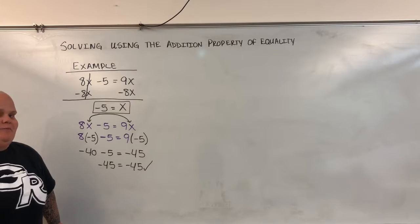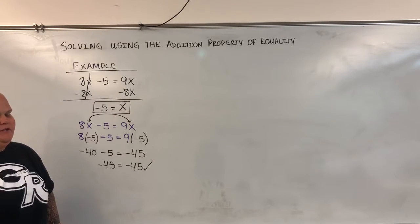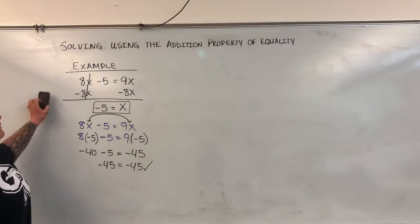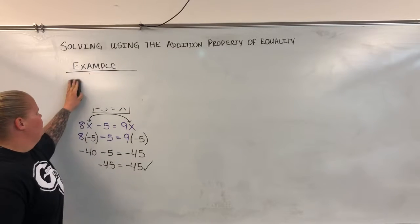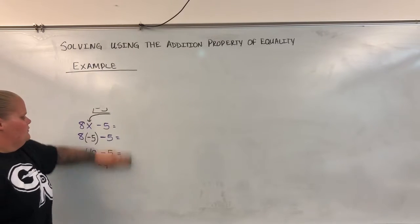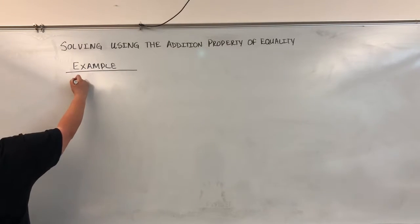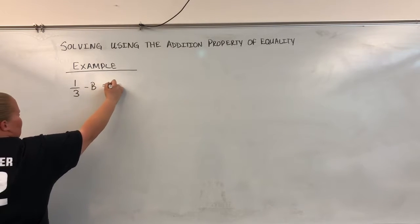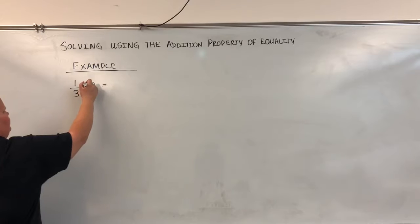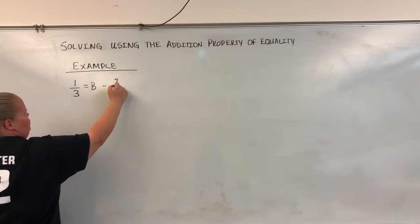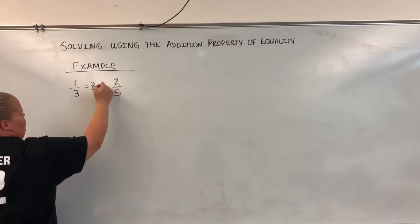We're going to look at one more example, and this one's going to deal with fractions. I know a lot of times when students see fractions, they freak out a little bit. It's okay, we're going to go through it together. So this example is 1 over 3 equals b minus 2 over 5.